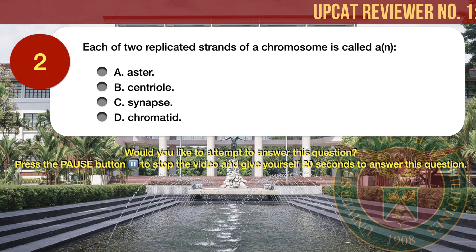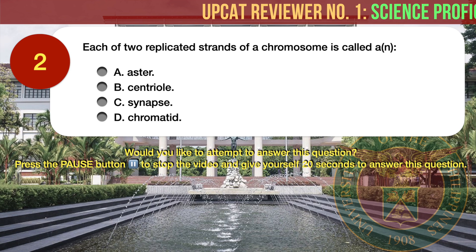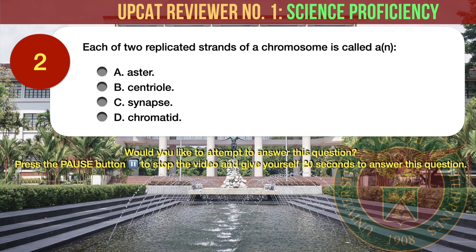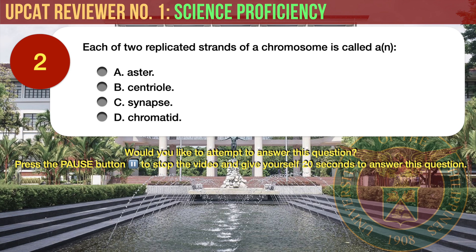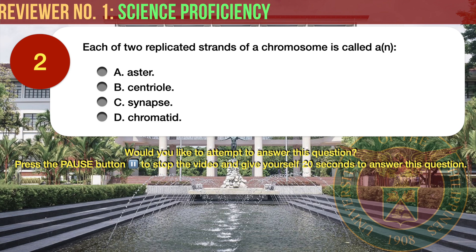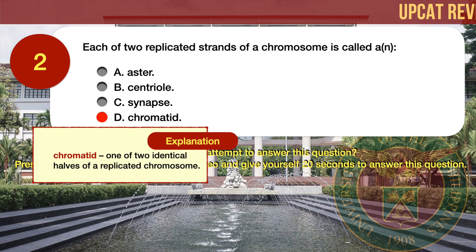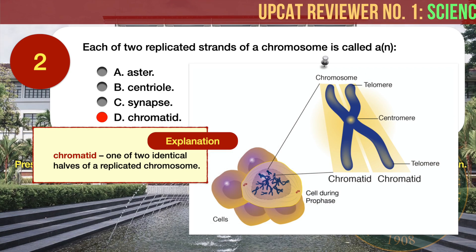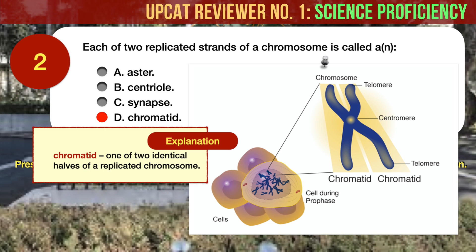Question number 2. Each of two replicated strands of a chromosome is called: A. Aster. B. Centriole. C. Synapse. D. Chromatid. The correct answer is D, Chromatid. A chromatid is one of two identical halves of a replicated chromosome. During cell division, the chromosomes first replicate so that each daughter cell receives a complete set of chromosomes.